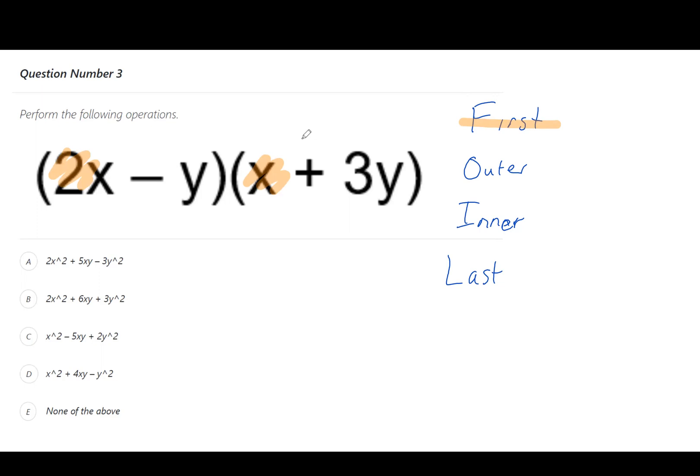This means 2x times x. When multiplying algebra terms we multiply the numbers, which in this case is 2 times the 1 in front of the x that's just not written, giving us 2. When we multiply x's we count them and that becomes the power, so x times x becomes x squared.